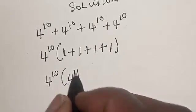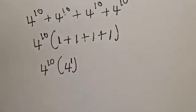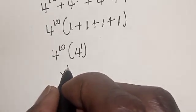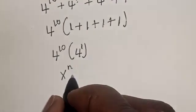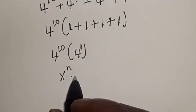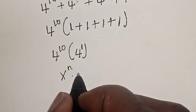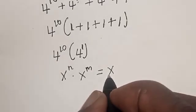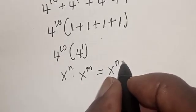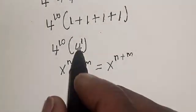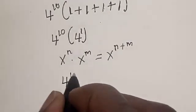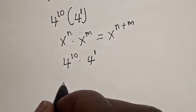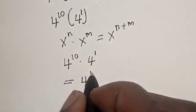And 4 is the same thing as 4 raised to power 1. Note that if you have S raised to power 10 multiplied by S raised to power 1, this is equal to S raised to power 11. So we now have 4 raised to power 10 multiplied by 4 raised to power 1, which is equal to 4 raised to power 11.